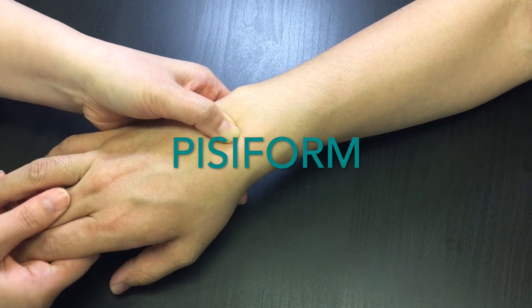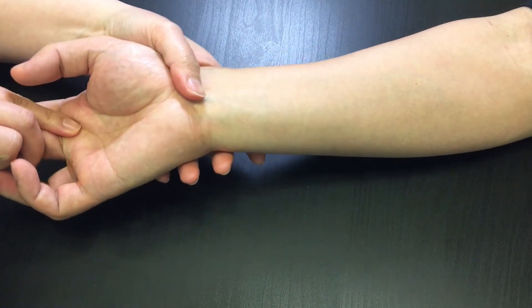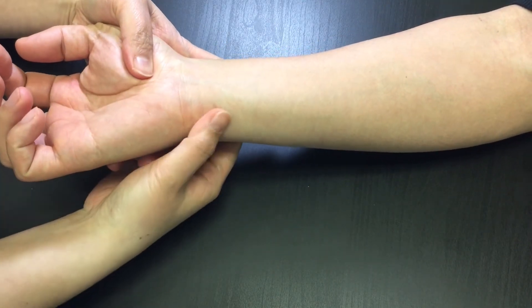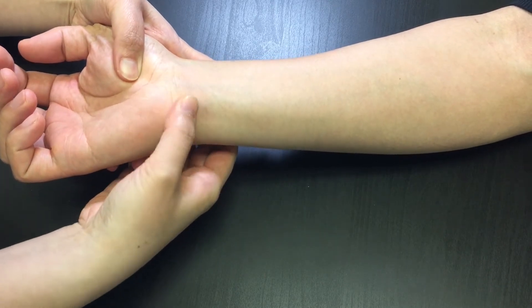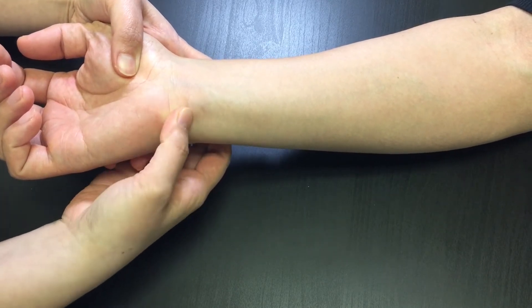Pisiform sits on top of the triquetrum in the proximal row of carpals. Find the flexor crease and move along the crease toward ulna. Roll your finger in small circles to feel the pisiform.